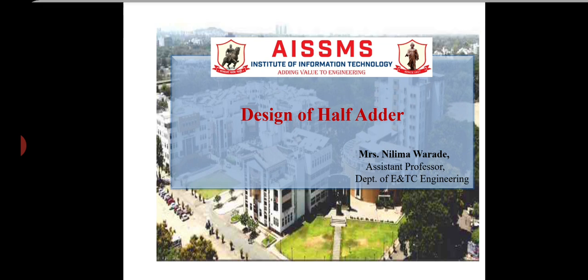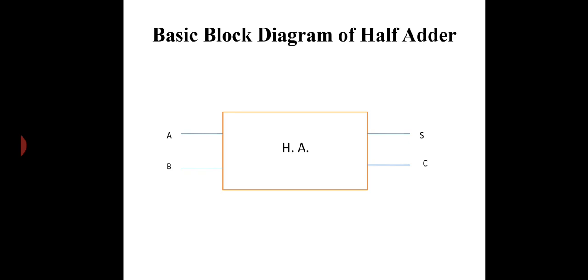To understand what is half adder, you need to know about adder first. Adder is a combinational digital circuit which is used for adding two numbers which produces sum bit and carry bit as the output. Or, we can say half adder is a combinational arithmetic circuit that adds two numbers and produces sum bit and carry bit as the outputs.